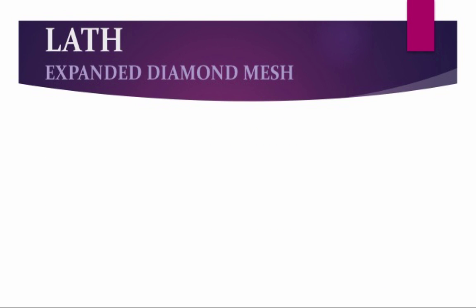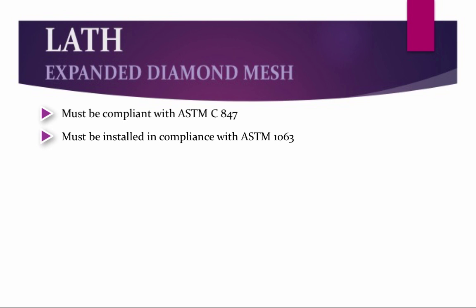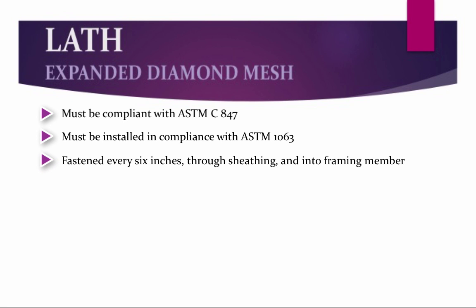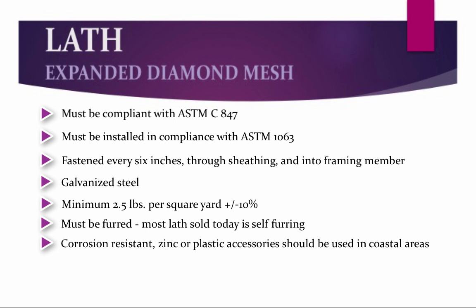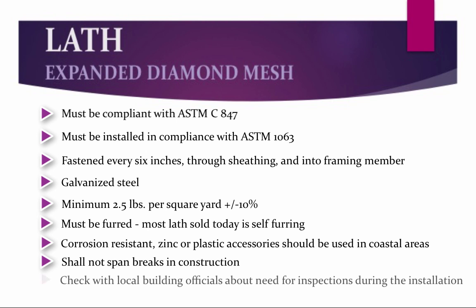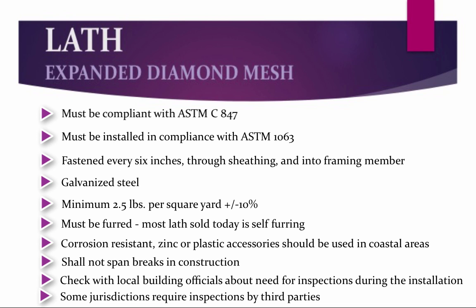Here we will discuss lath options. Expanded diamond mesh lath must be compliant with ASTM C847. All lath must be installed in compliance with ASTM C1063. Lath shall be fastened every 6 inches through the sheathing and into a framing member. Lath is typically made out of galvanized steel and must be a minimum of 2.5 pounds per square yard in compliance with ASTM C847. All lath must be furred — most lath sold today is self-furred. Corrosion-resistant zinc or plastic accessories should be used in coastal areas. Lath shall never span breaks in construction — always check with local building officials about the need for inspections during the installation process.